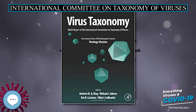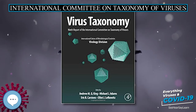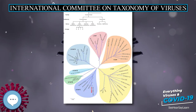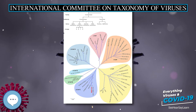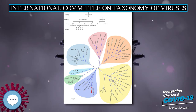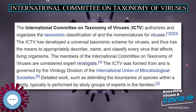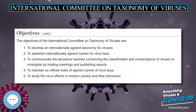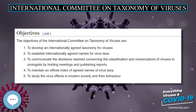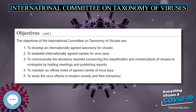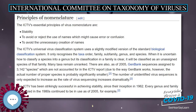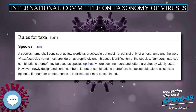The International Committee on Taxonomy of Viruses, ICTV, authorizes and organizes the taxonomic classification of and the nomenclatures for viruses. The ICTV has developed a universal taxonomic scheme for viruses, and thus has the means to appropriately describe, name, and classify every virus that affects living organisms. The members of the ICTV are considered expert virologists.